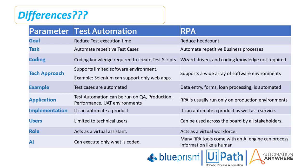From a coding perspective, test automation requires coding knowledge to create test scripts, whereas RPA does not require coding knowledge to develop business processes or bots. Regarding the technology approach, test automation supports a limited software environment, whereas RPA supports a wide range of software environments. For example, Selenium can support only web applications, whereas RPA supports Windows applications, web applications, mobile applications, and so on.